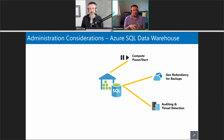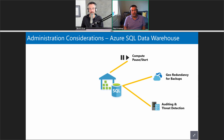Auditing and threat detection: Microsoft can do this for around £11 a month per server. They'll do the auditing and threat detection using some fancy machine learning AI services — but we still need somebody to configure it, define a storage area, and work with that.